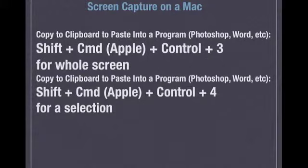If you want to create a copy to the clipboard to be able to paste it into a document like Photoshop or Word, you would hit Shift plus Command plus Control plus 3 for the whole screen, or Shift plus Command plus Control plus 4 for a selection. Both of those are going to copy it to your clipboard. So then you open up something like Photoshop or Word, hit Edit > Paste, and that'll paste down the selection you've just captured.